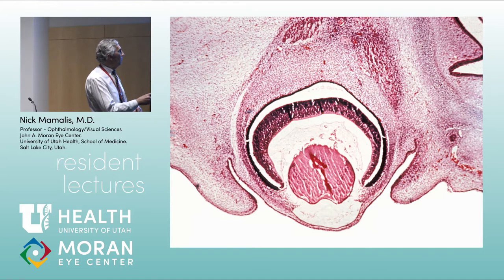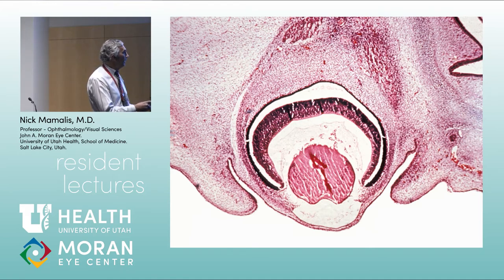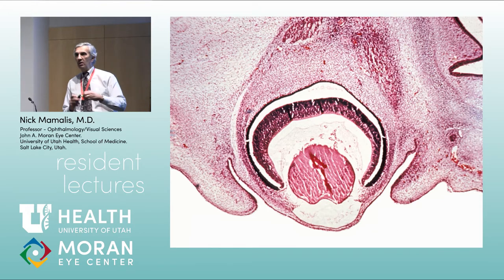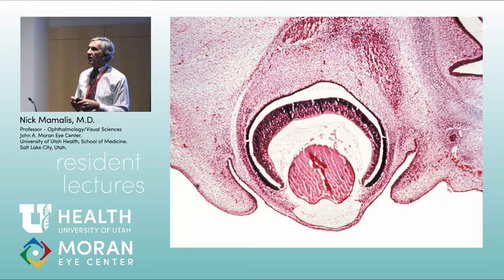The outer layer is pigmented, continuous all the way back posteriorly to the pigment epithelium. The inner layer is non-pigmented, continuous with the retina — and remember, the entire retina forms from that one inner layer.